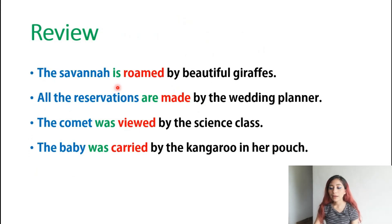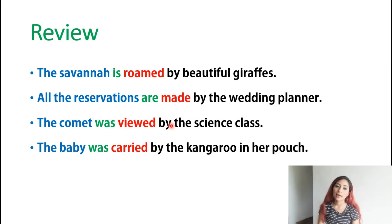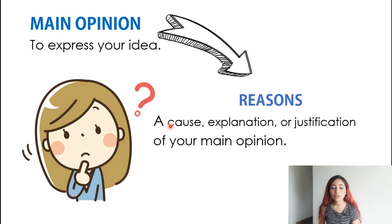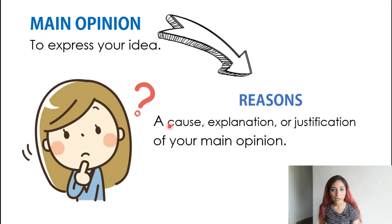For review, here are examples: 'The savannah is run by beautiful giraffes.' 'All the reservations are made by the wedding planner.' We have the subject, the verb 'to be,' the past participle verb 'made,' and then 'by the wedding planner' as the rest of the sentence. We also learned about main opinions and reasons — a main opinion expresses your idea, and the reasons provide a cause, explanation, or justification of your main opinion.